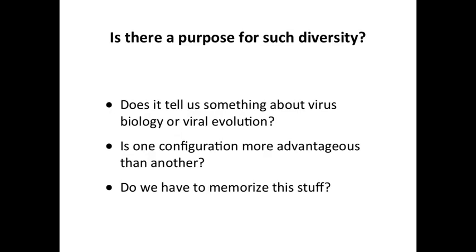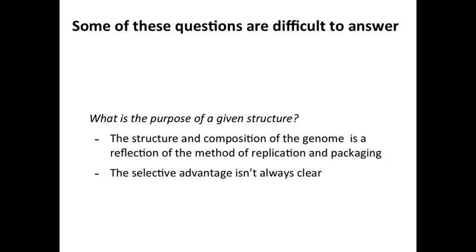And maybe most of all you want to know if you have to memorize it. There's a lot of ignorance here — I can't answer most of these questions. Humans and all mammals have DNA genomes, so why do viruses have all these configurations? We don't know. The structure and composition of the genome — whether it's DNA or RNA, single or double stranded — is a reflection of how it replicates. There are viruses with all seven genome types and I don't know if any has a selective advantage over another.